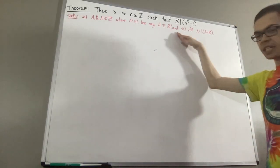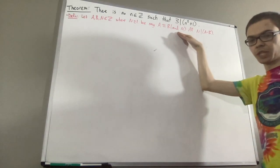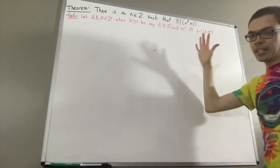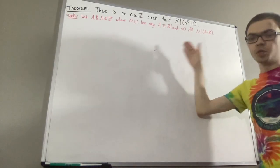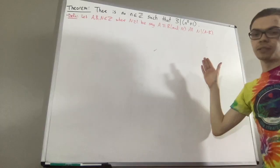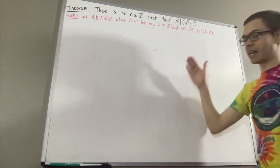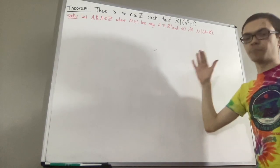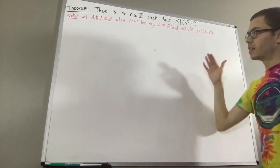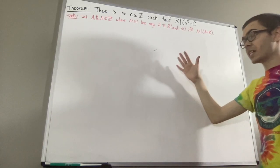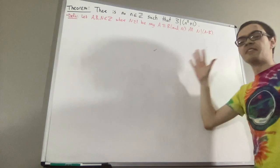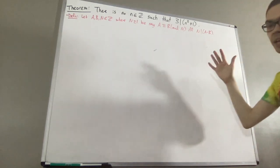This relation is an equivalence relation. That is, given any integer a, a is congruent to a mod n. If a is congruent to b mod n, then b is congruent to a mod n. And if a is congruent to b mod n and b is congruent to c mod n, then a is congruent to c mod n.